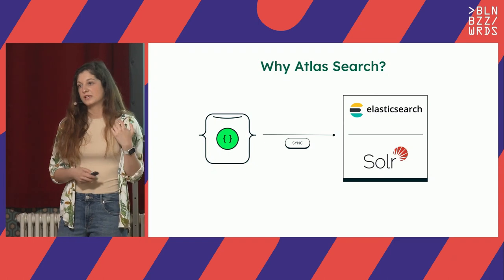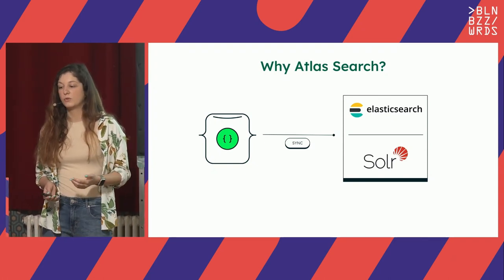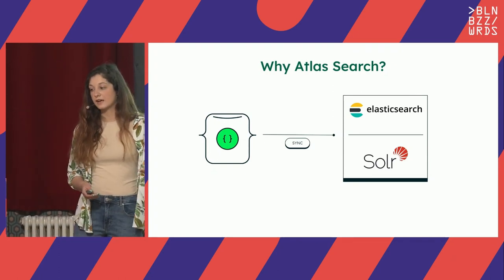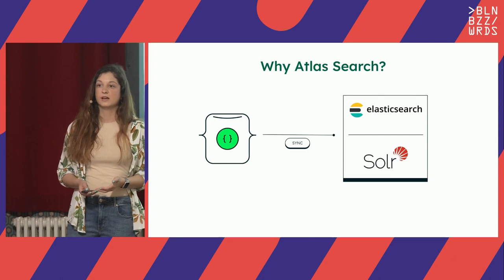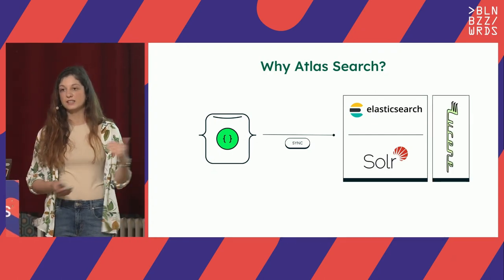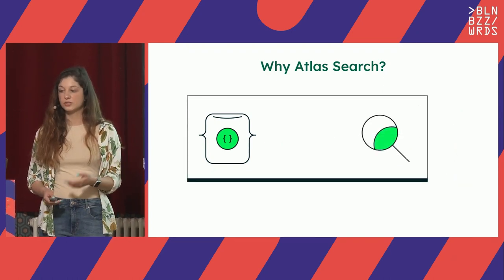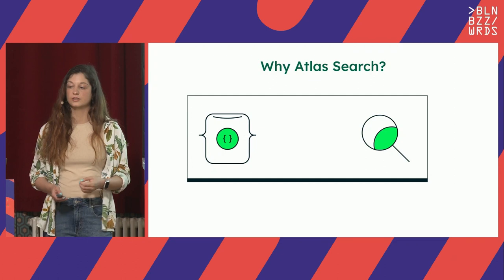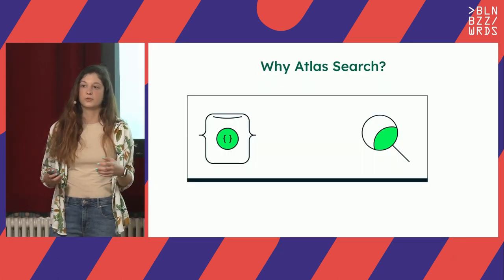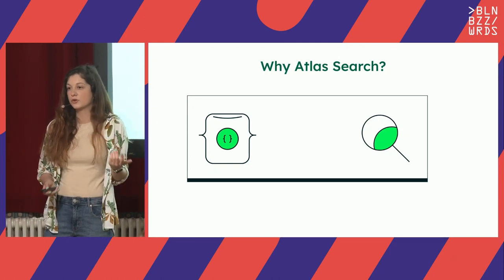So the first experience of 87% of shoppers is the search bar. That is why search is super important for modern applications. Why do we want to use Atlas Search? In the past, our clients at MongoDB were integrating their MongoDB database with existing services like Elastic and Solr. All of them use Apache Lucene. We thought: why don't we bring this into the platform? We implemented Atlas Search, which uses Apache Lucene under the hood.